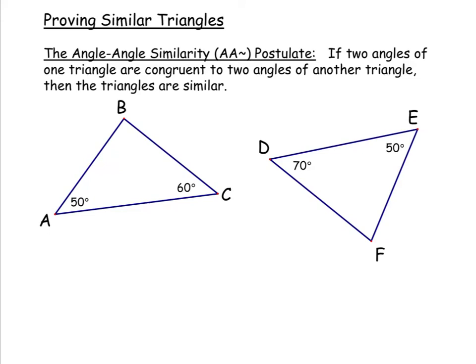In this lesson, we're going to discuss the different ways there are to prove that triangles are similar. To start things off, we have what's known as the angle-angle similarity postulate, abbreviated angle-angle similarity. This says that if two angles of one triangle are congruent to two angles of another triangle, then the triangles are similar.